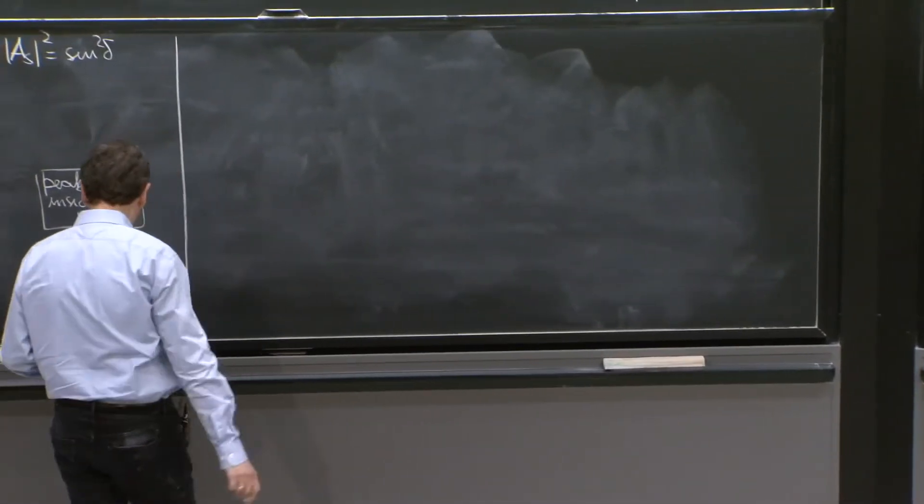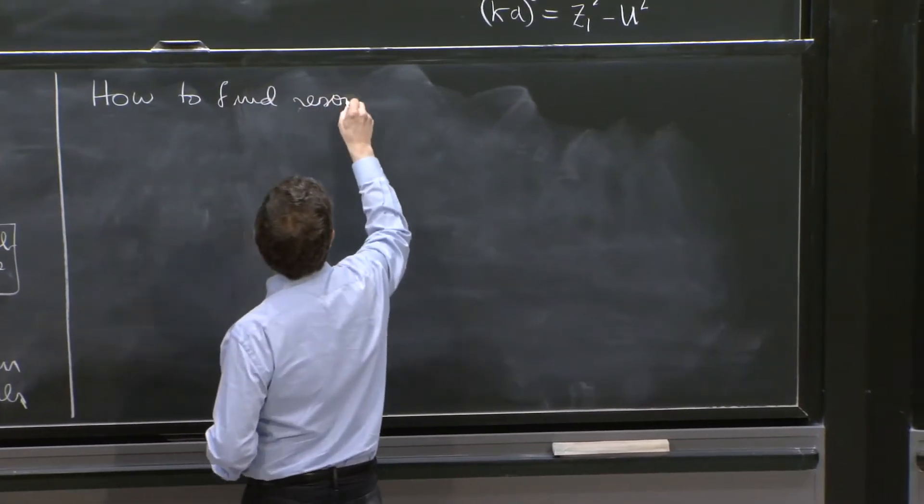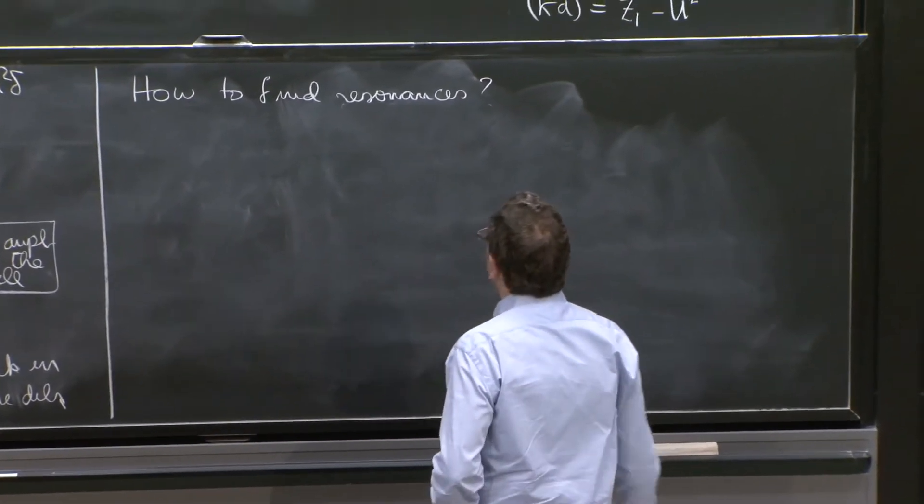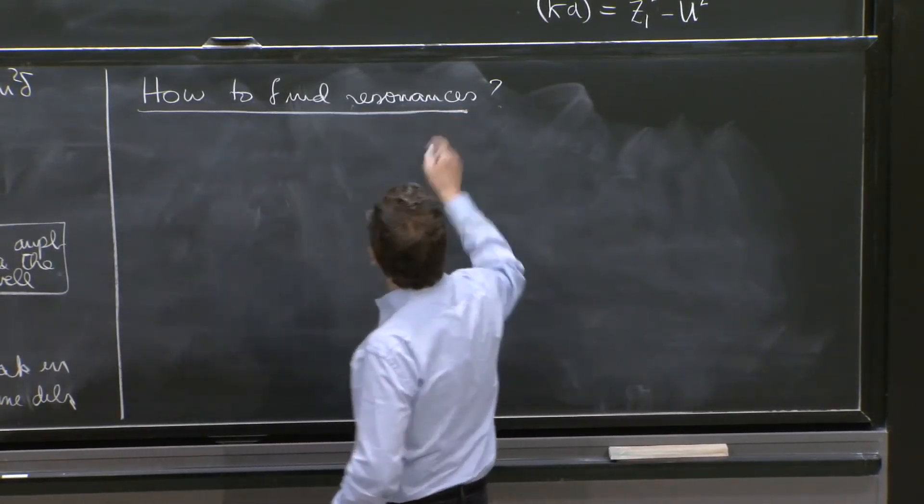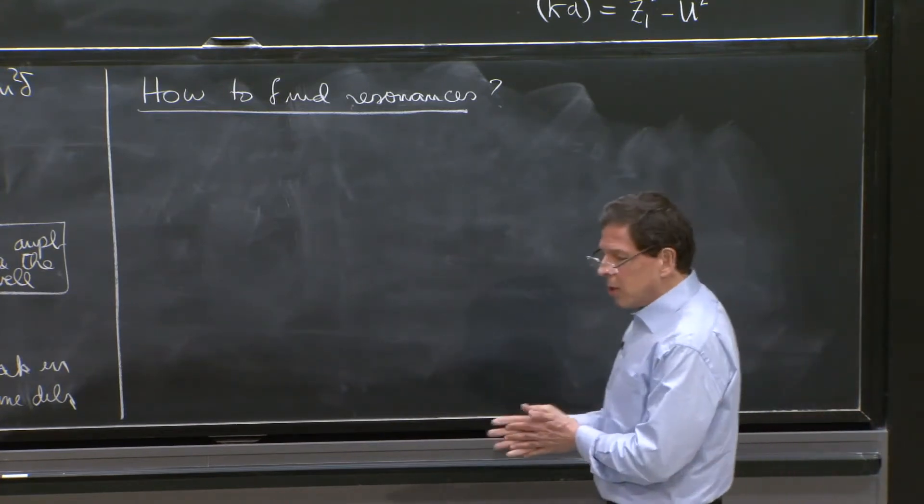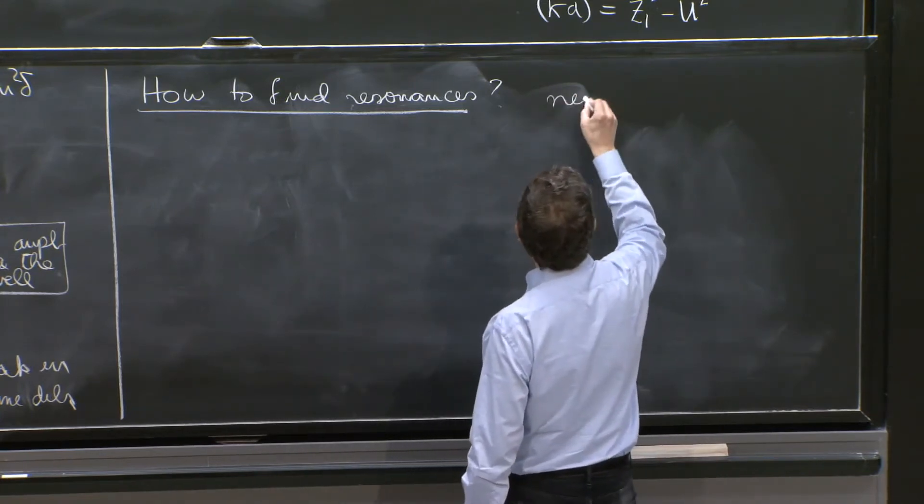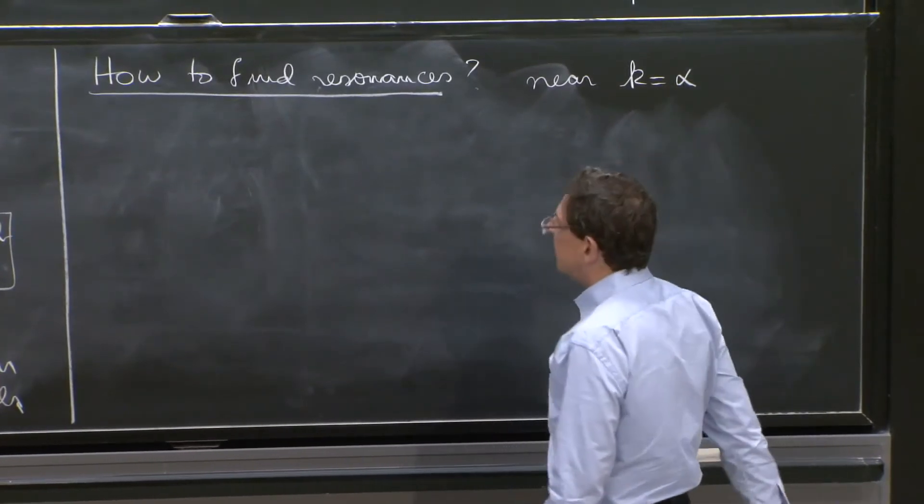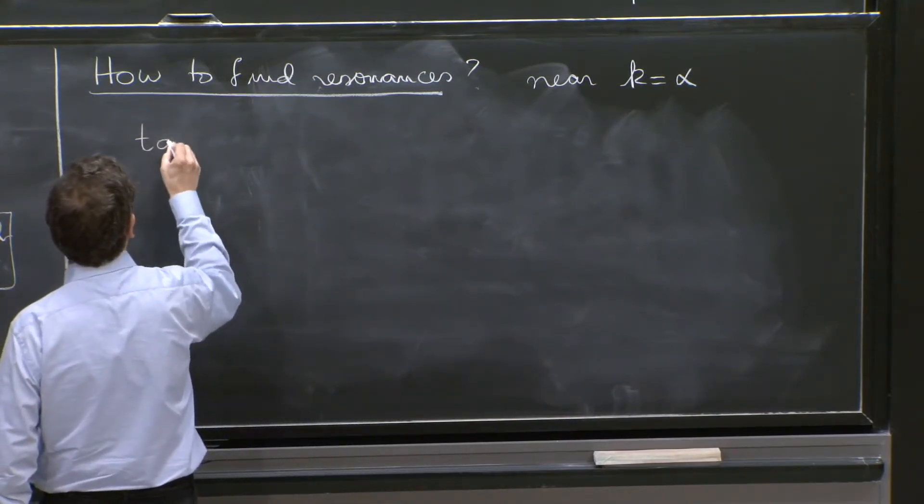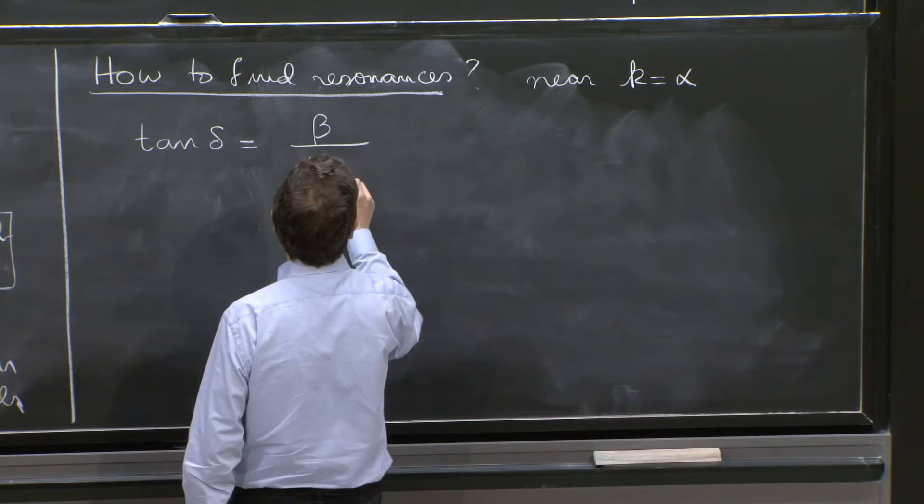So how do I find resonances? Let's model resonances a little bit. By that, it's writing a formula that is simple enough that seems to capture what's happening. And that formula is going to inspire us to think of resonances perhaps a little more clearly. So suppose you have a resonance near k equal alpha. The following formula would be a good way to represent the resonance: tan δ is equal to β over α minus k.